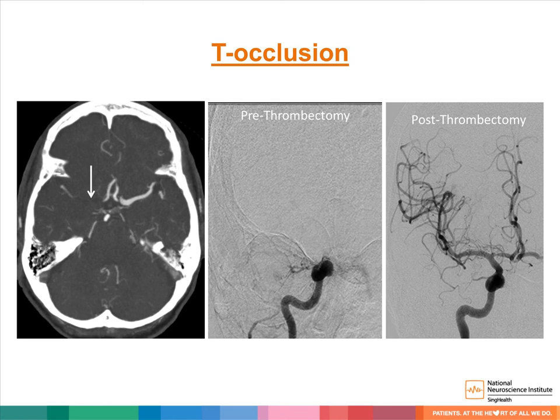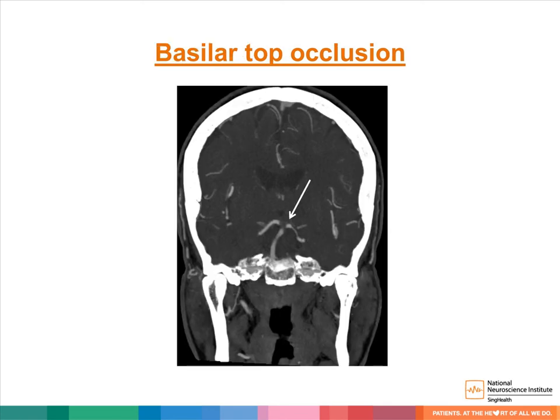The image in the middle is an angiographic image taken pre-thrombectomy demonstrating the T occlusion. The image on the right is an angiographic image taken post-thrombectomy demonstrating reperfusion. Ischemic strokes can also occur in the posterior circulation. In this example, we demonstrate a top of the basilar occlusion.